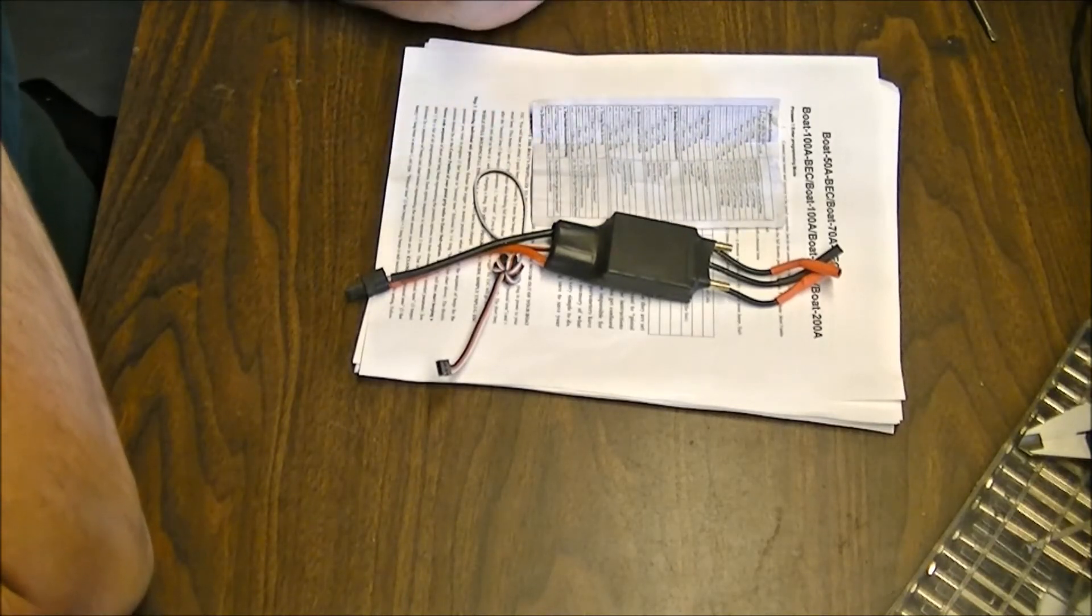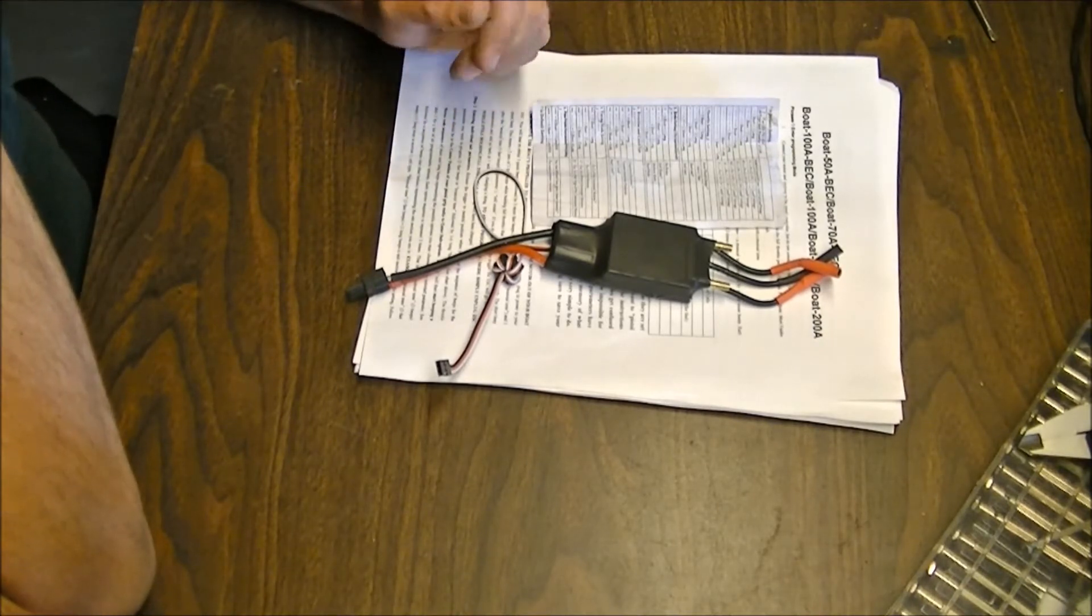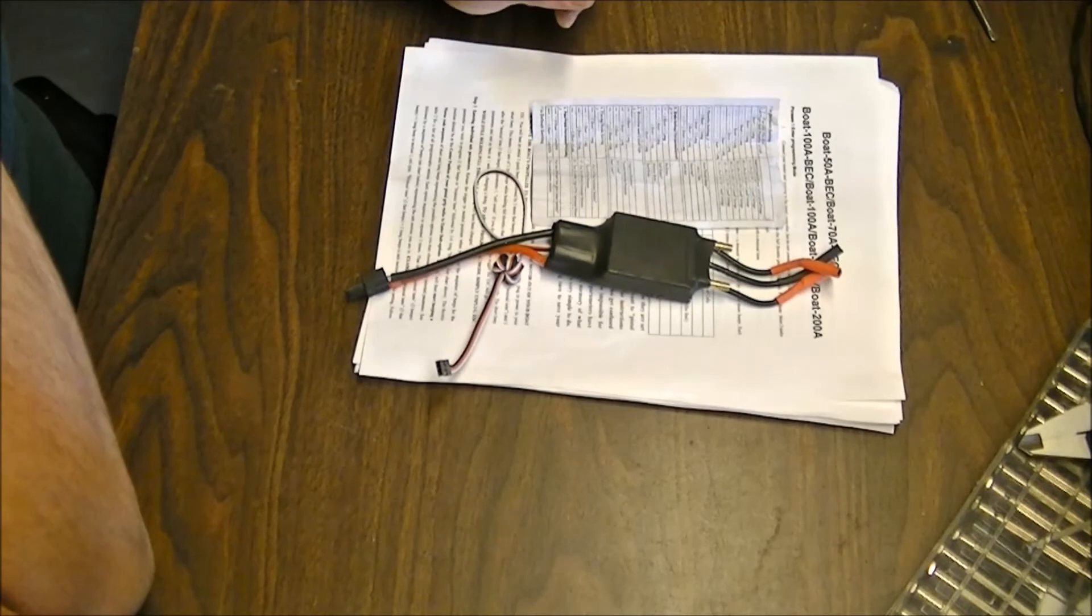From the factory it comes with a motor and the minimum requirements Hobby King says is 100 amp ESC. So I figured 125, we're good to go, with a really good burst rate too.